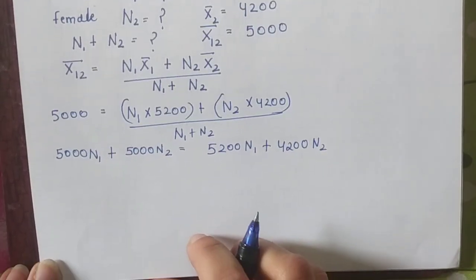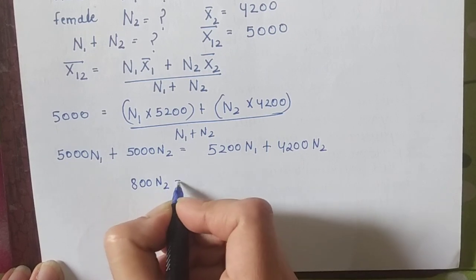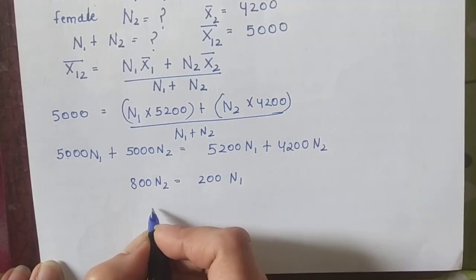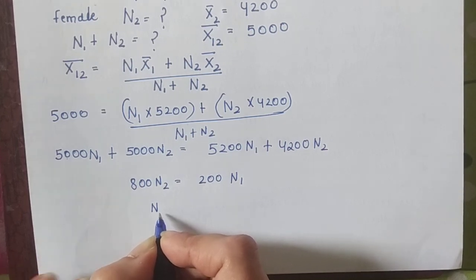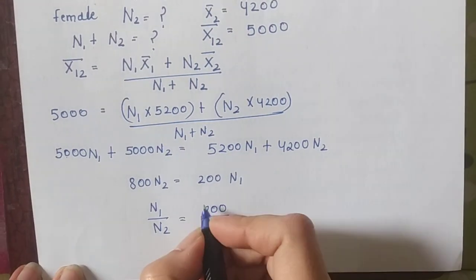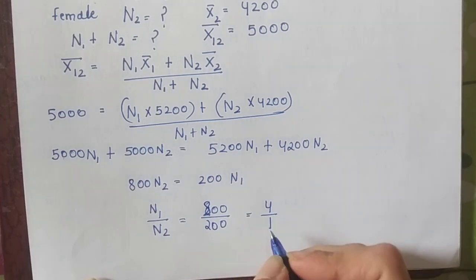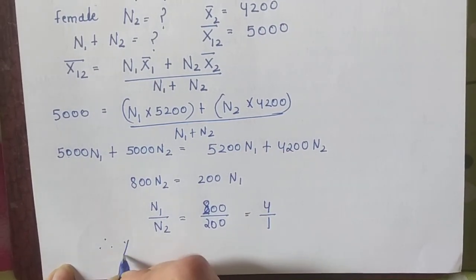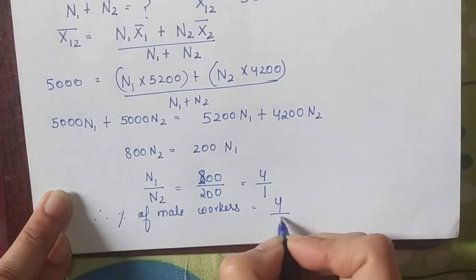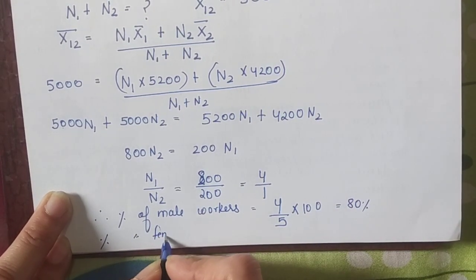I will multiply to get 5000n₁ + 5000n₂ = 5200n₁ + 4200n₂. Taking terms to one side: 800n₂ = 200n₁. So n₁/n₂ = 800/200 = 4/1. This means males are 4 times the females. Therefore, percentage of male workers = 4/5 × 100 = 80%, and percentage of female workers = 1/5 × 100 = 20%.